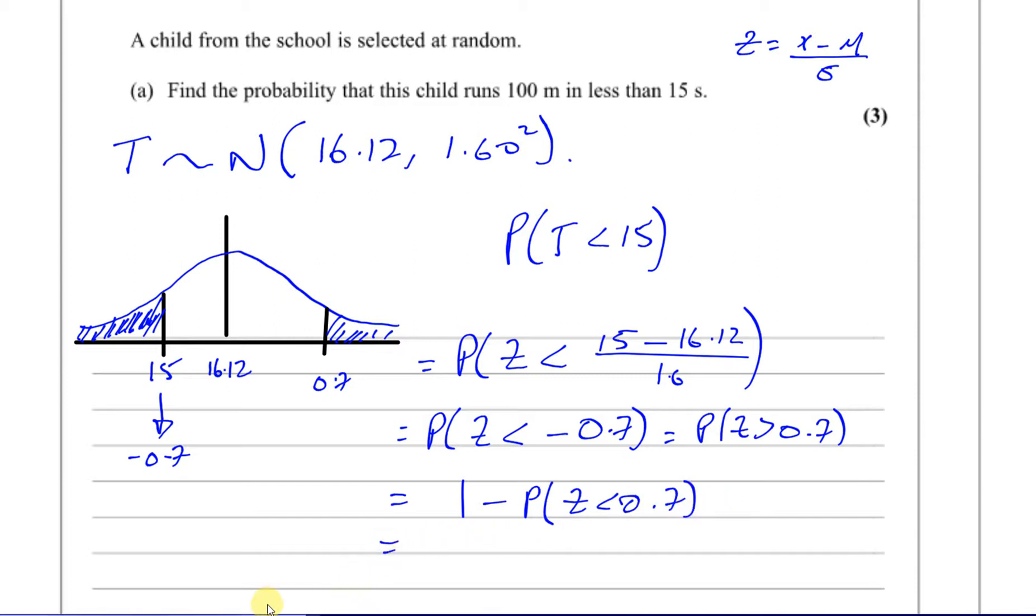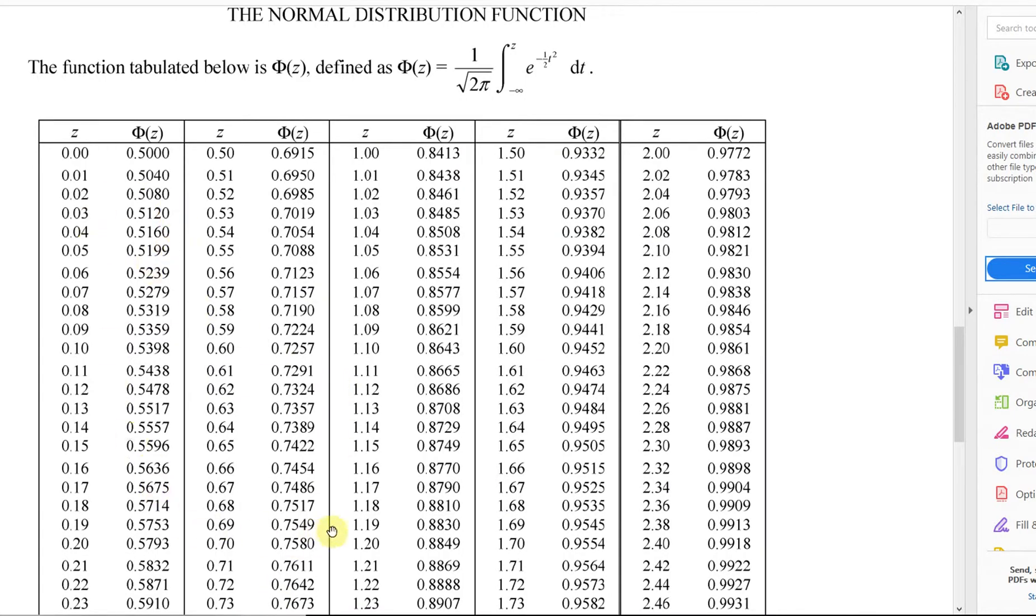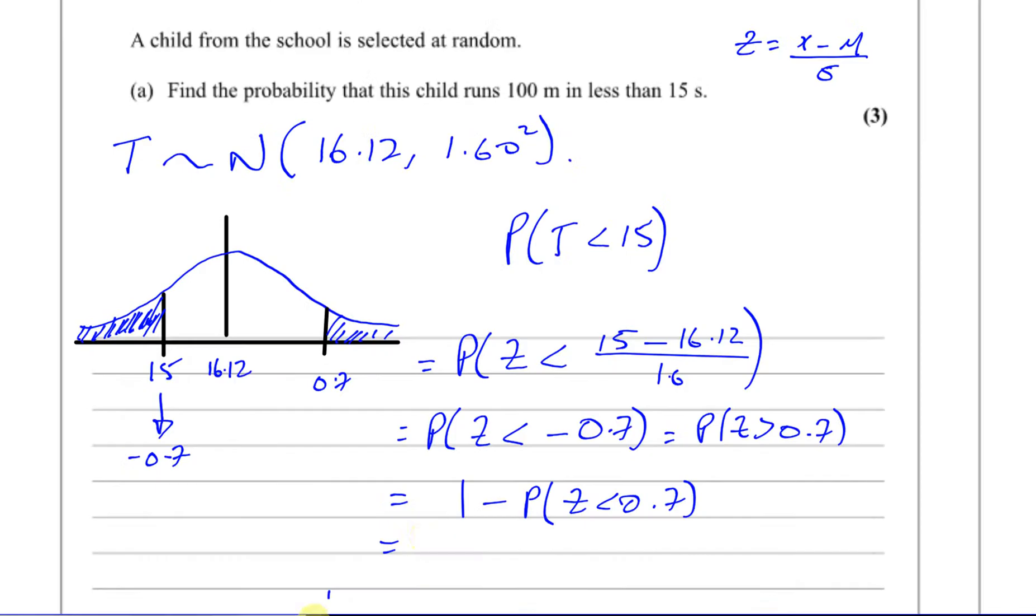So we go to our table of values and we look at 0.7 for z, which is over here. This is 0.7, so it's 0.7580.